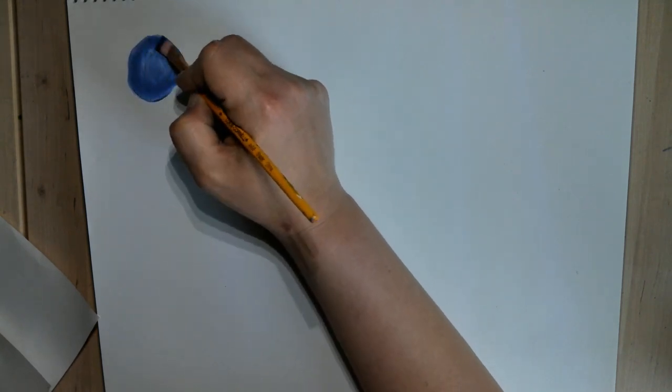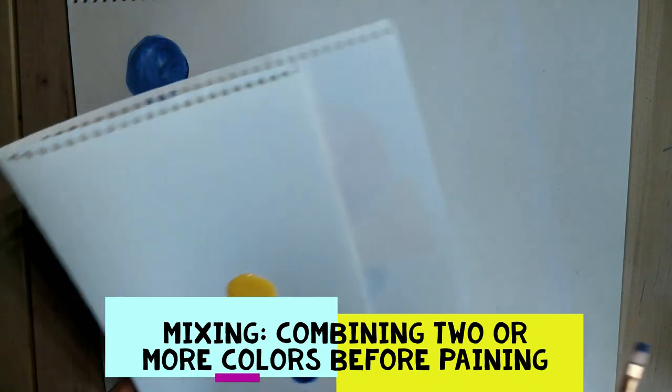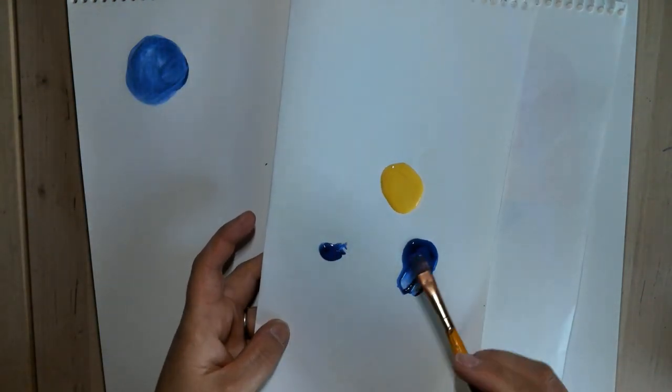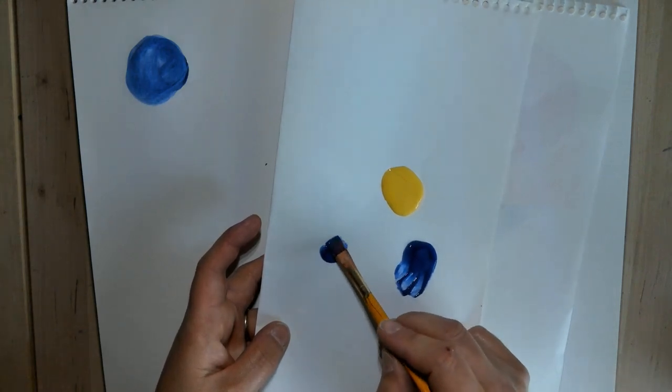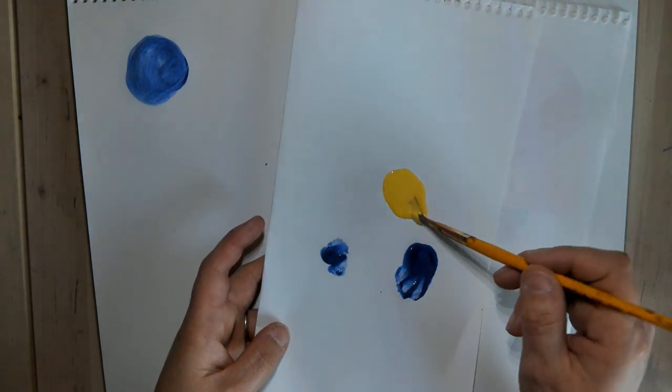Mixing is also exactly what it sounds like. That's when you have your two different colors, or three or four or however many, and you take and mix together the two colors before you paint with them.